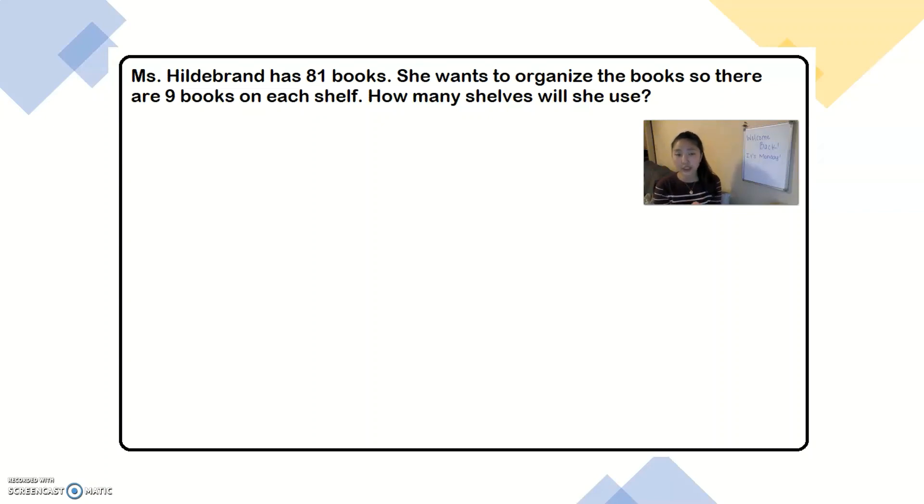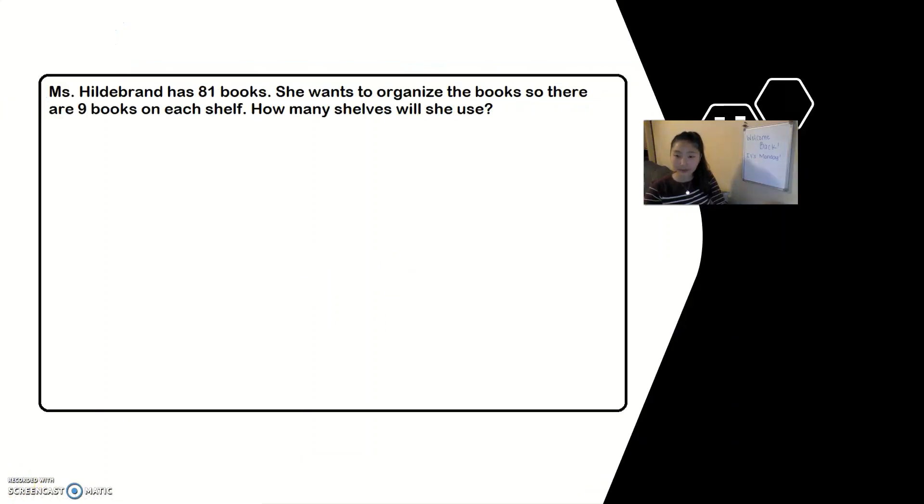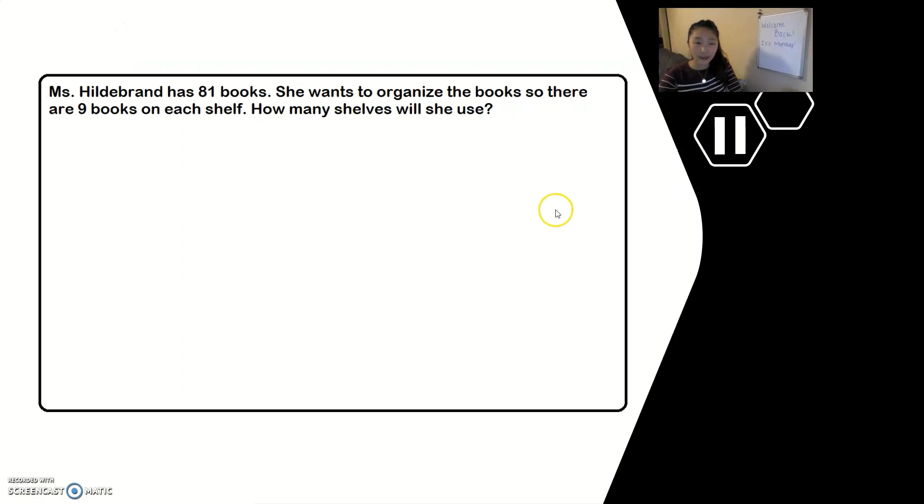So you heard it. The question is about Miss Hildebrand and it is: Miss Hildebrand has 81 books. She wants to organize the books so there are nine books on each shelf. How many shelves will she use? So now you need to help us figure this out. I'm going to give you a moment to read that over to yourself so you can do your retelling.